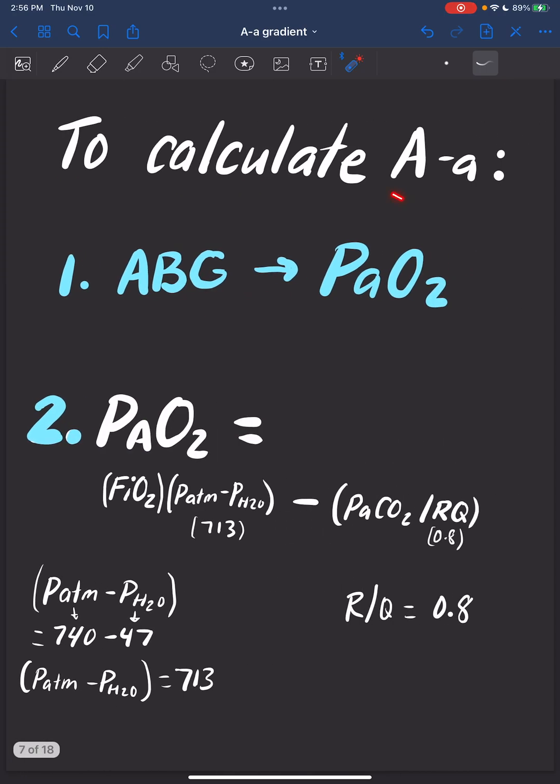To calculate the A-a gradient, we're going to need an arterial blood gas to figure out the arterial oxygen, and we're going to need to use the alveolar gas equation to figure out the alveolar oxygen. Here's a reminder of how to do the alveolar gas equation. But because this is the A-a gradient video, we're going to focus on the A-a gradient math.